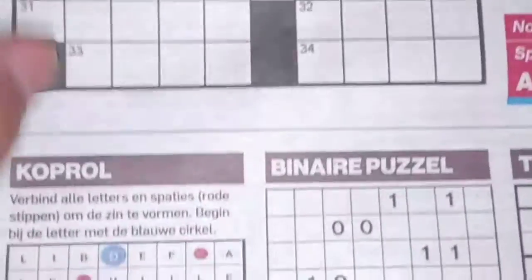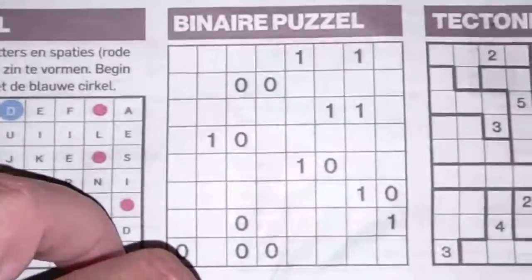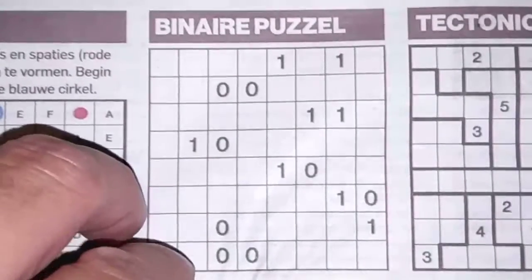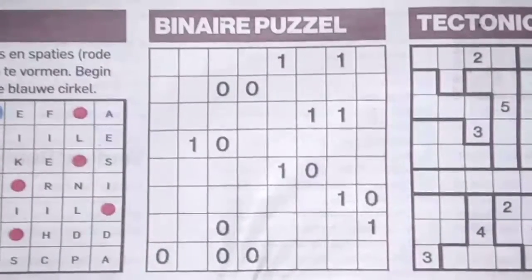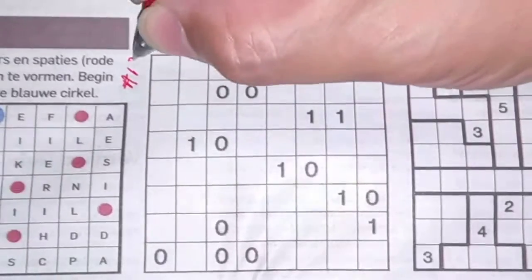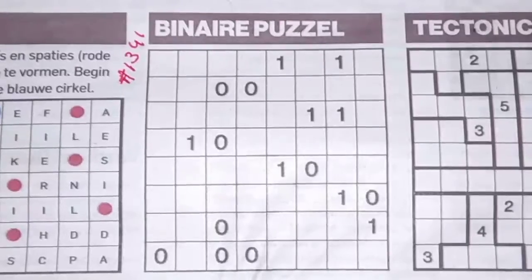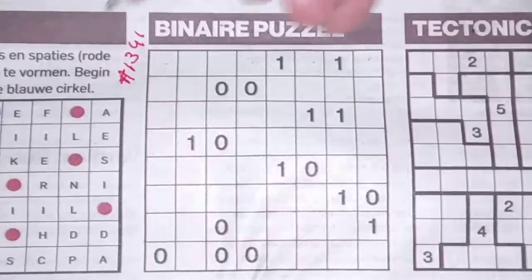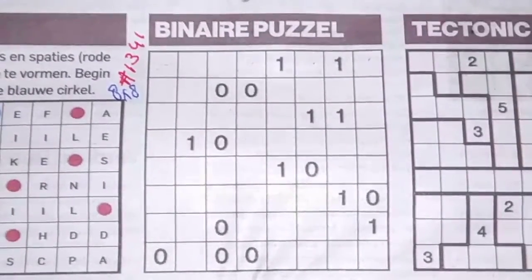The fourth Sudoku is a binary Sudoku. Let me focus this puzzle — this will be puzzle number 1341. What kind of binary puzzle is this? Let me count: 1, 2, 3, 4, 5, 6, 7, 8 — it's an 8 by 8 binary puzzle.